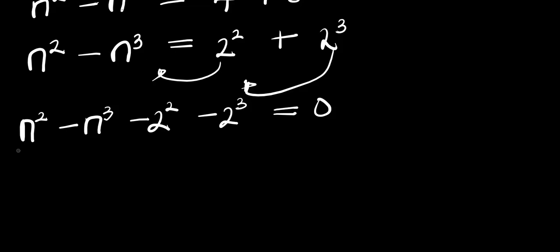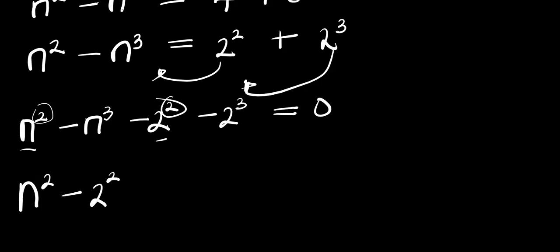Now let's group the terms with similar exponents. I have n² - 2², then minus n³ - 2³, and this equals 0.